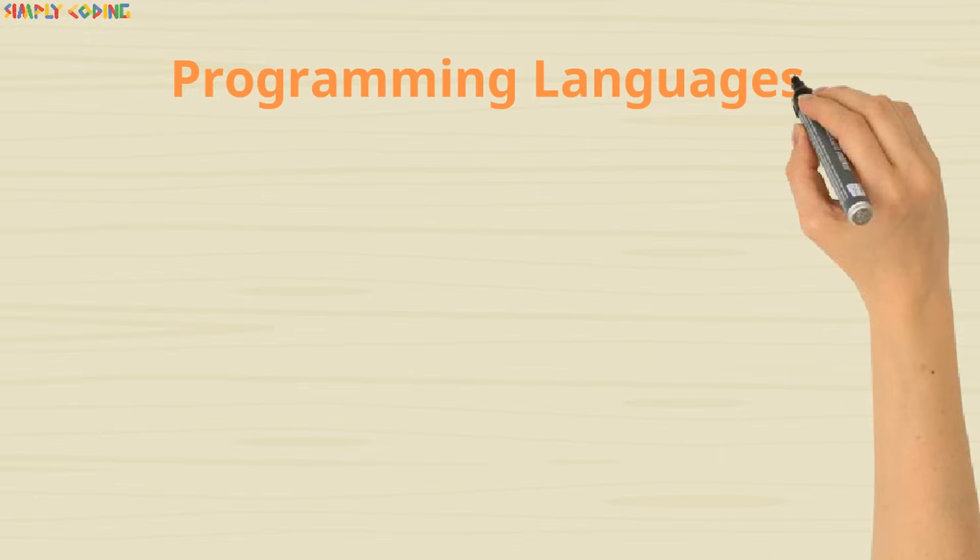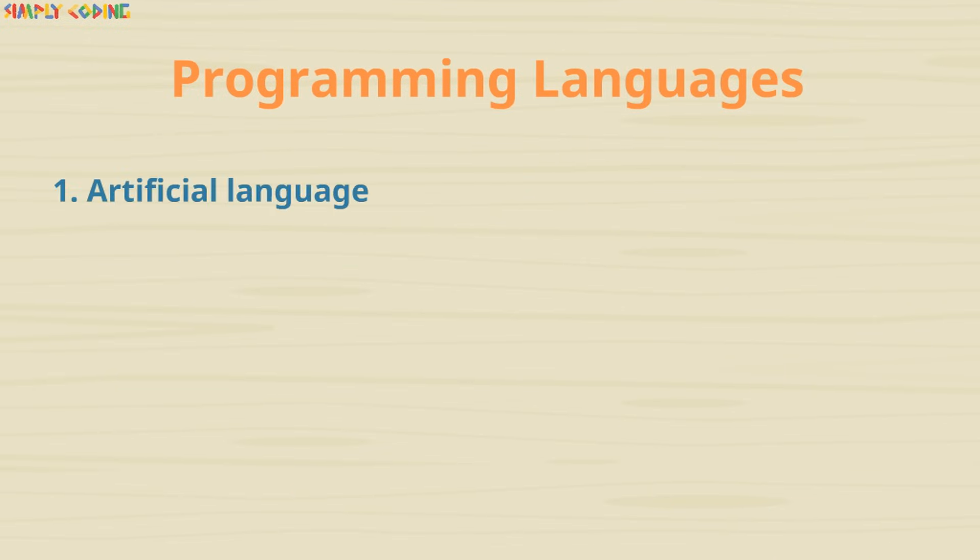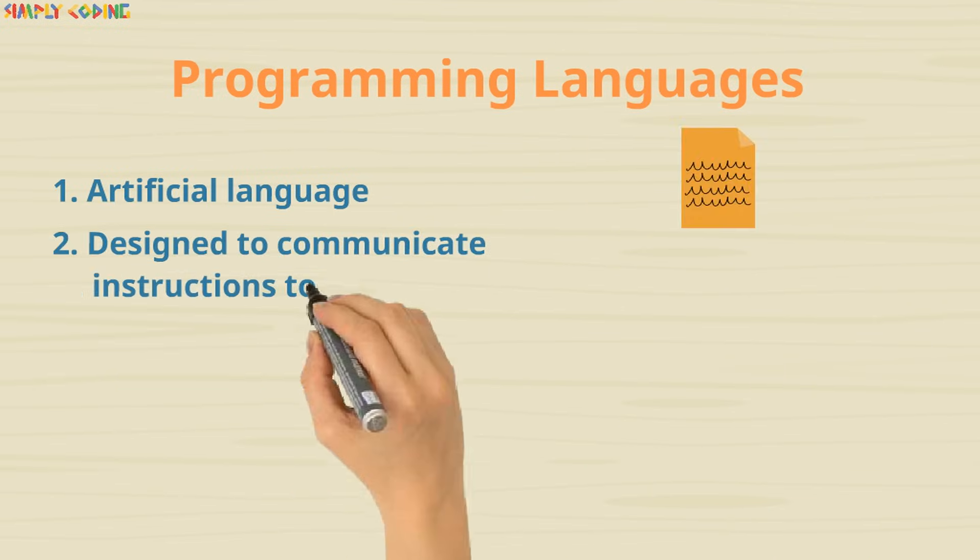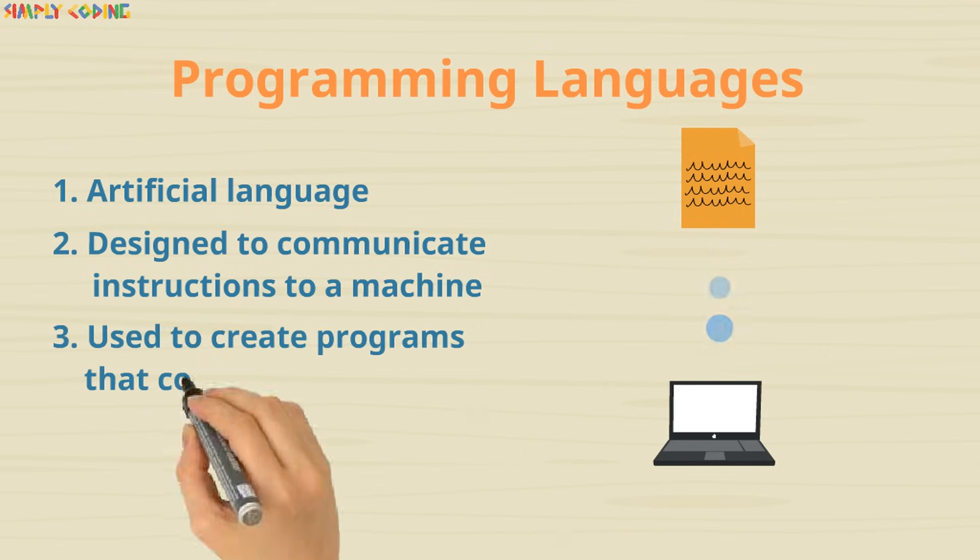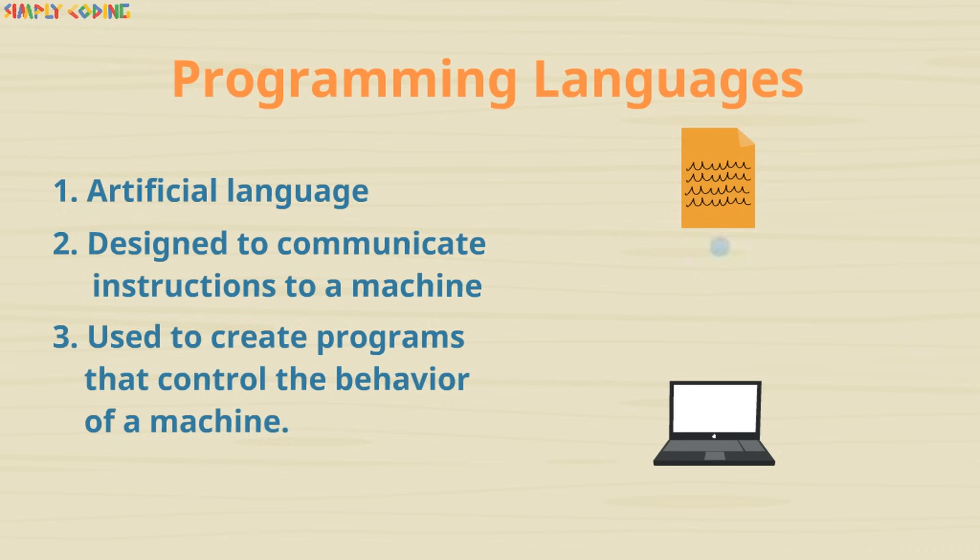A programming language is an artificial language designed to communicate instructions to a machine, particularly a computer. Programming languages can be used to create programs that control the behavior of a machine.